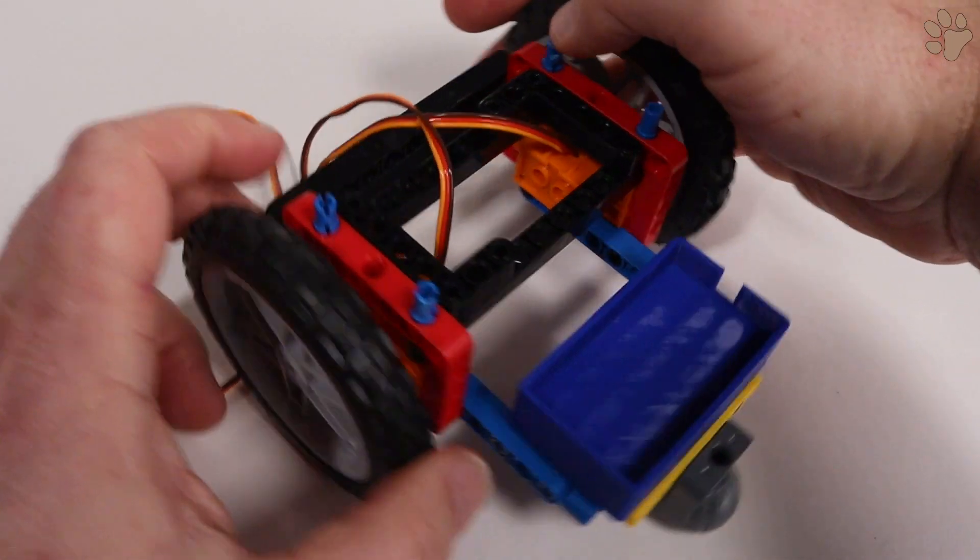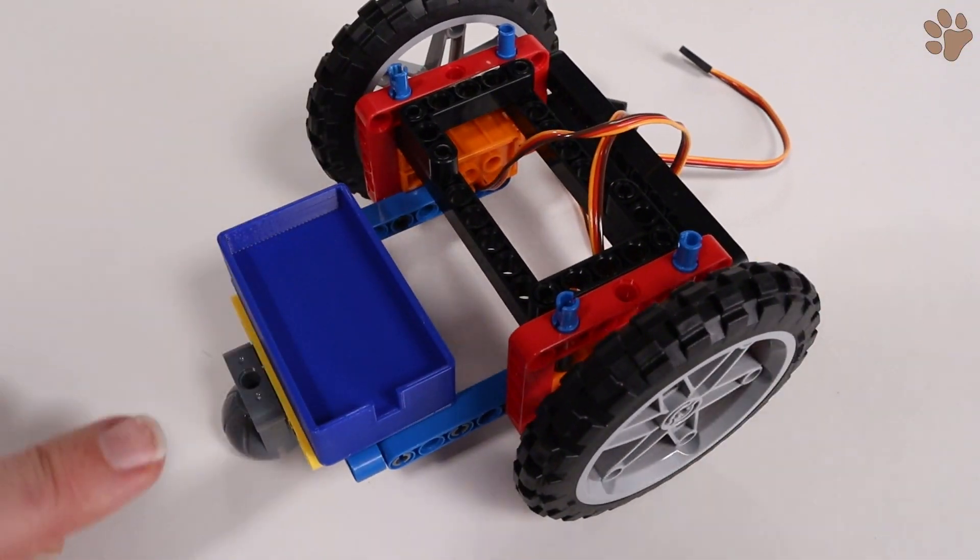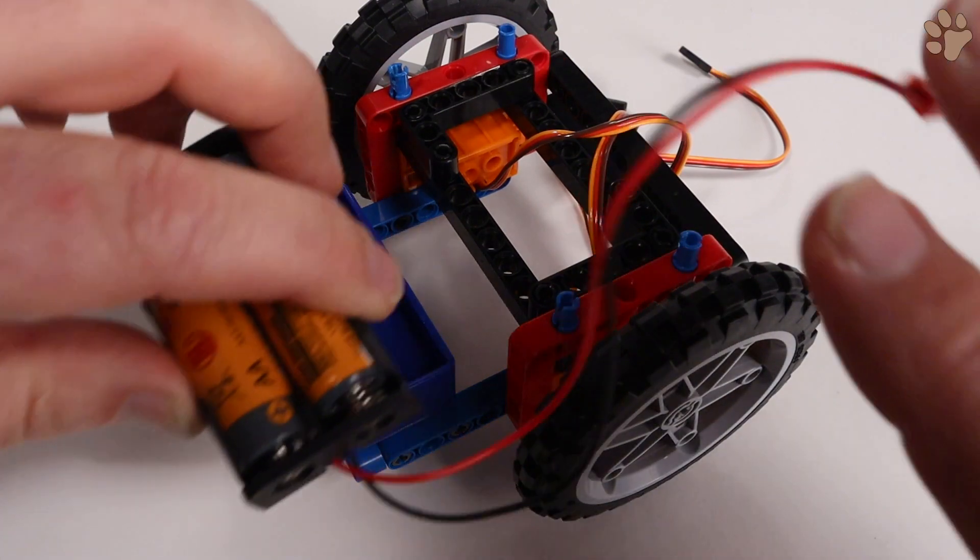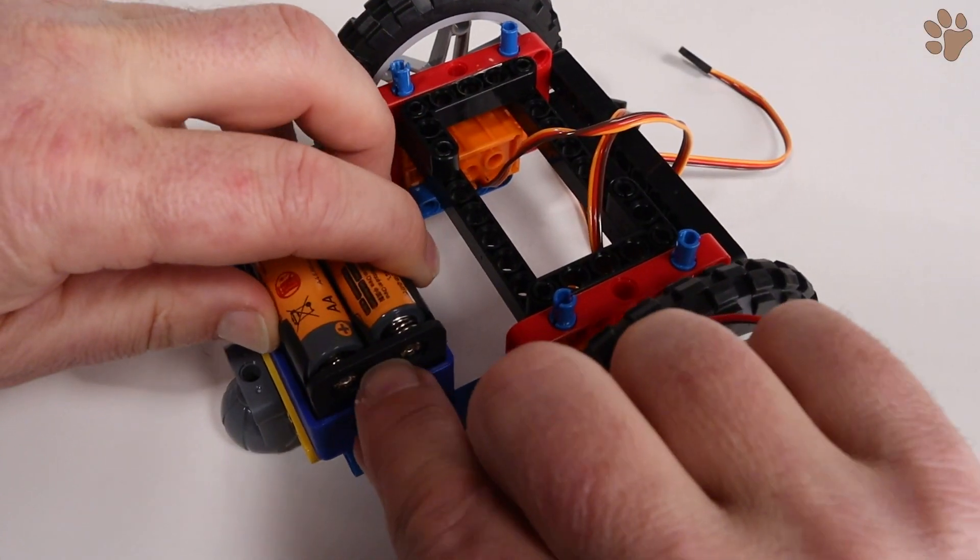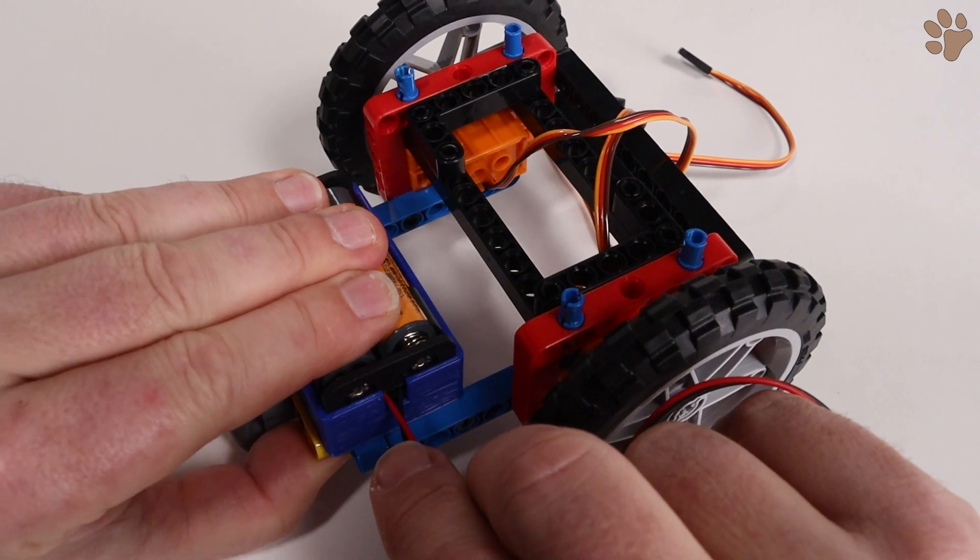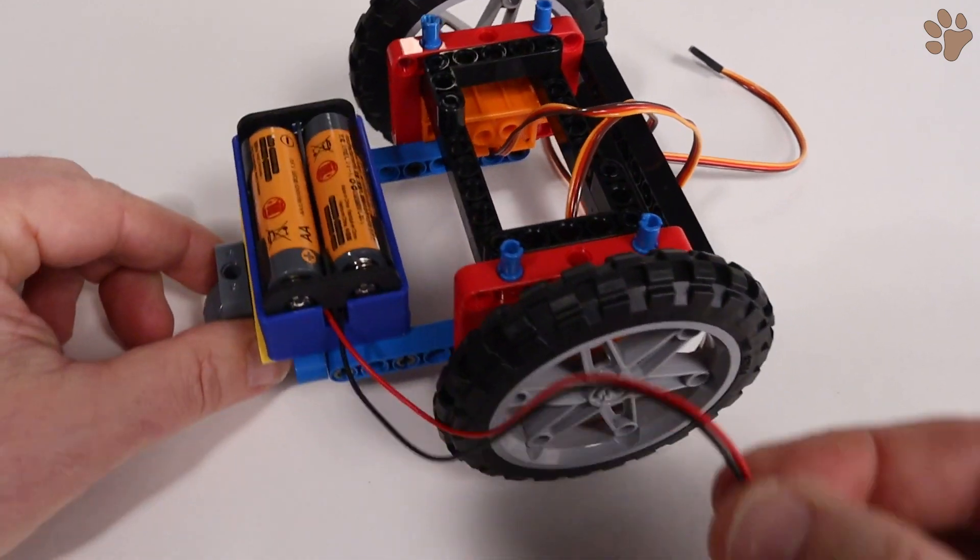Now let's install the battery pack. Note that there's a notch on the battery pack holder for the wires to go through. Simply press the battery pack down into the holder, routing the wires through the notch.